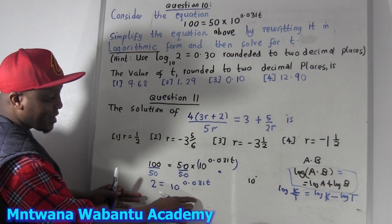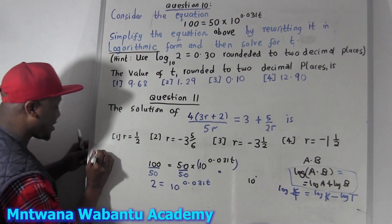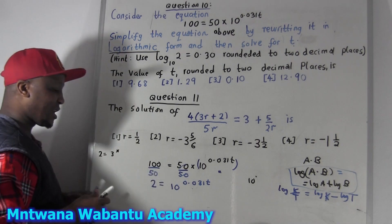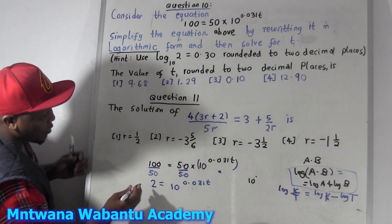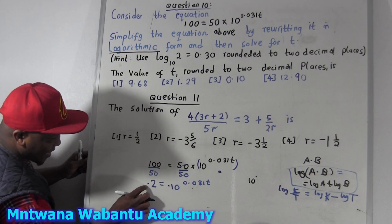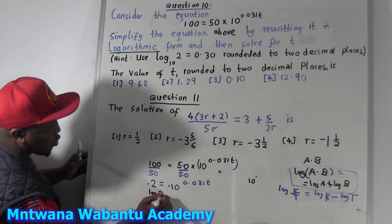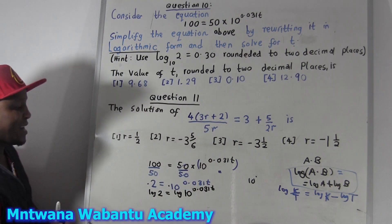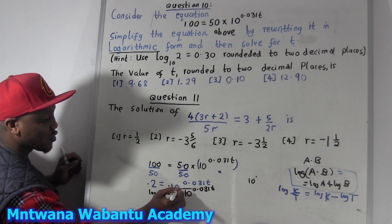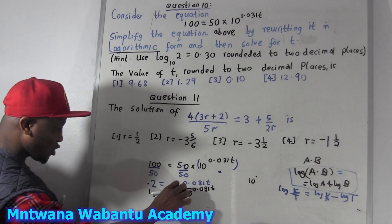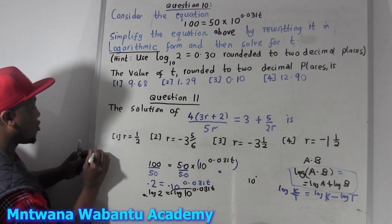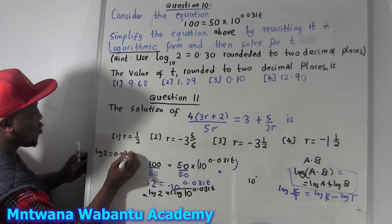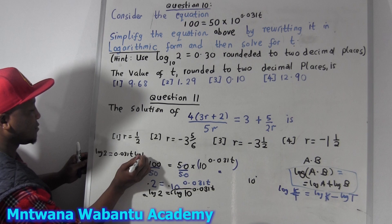So what you're going to do — I'm going to apply log on the left and on the right. So log 2 equals log of 10 to the power 0.031T. Now since I have a log of something with a power, this exponent is going to come in front of the log. So 0.031T comes in front, giving us: log 2 equals 0.031T times log 10.